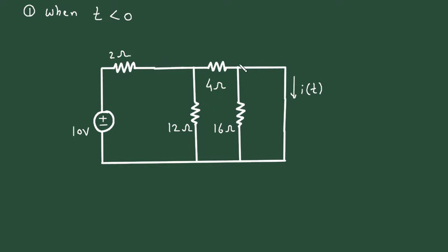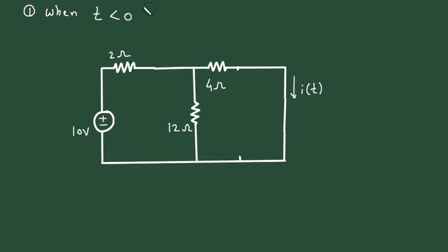Now here we can see both the terminals of this 16 ohm resistor are short-circuited, so this resistance value will be 0 and we can remove it from the circuit. Now we can easily find the value of I of t. Since we are considering t less than 0, this will be I of 0.